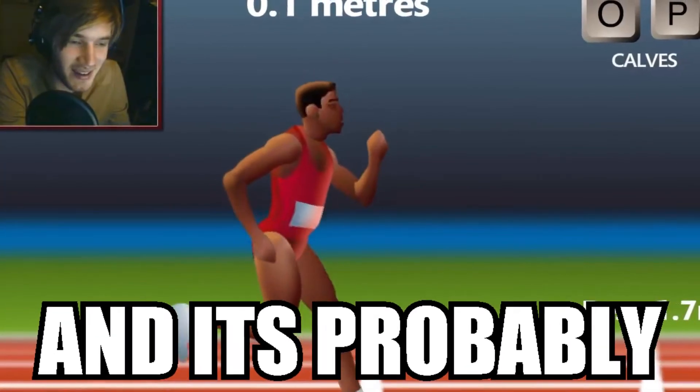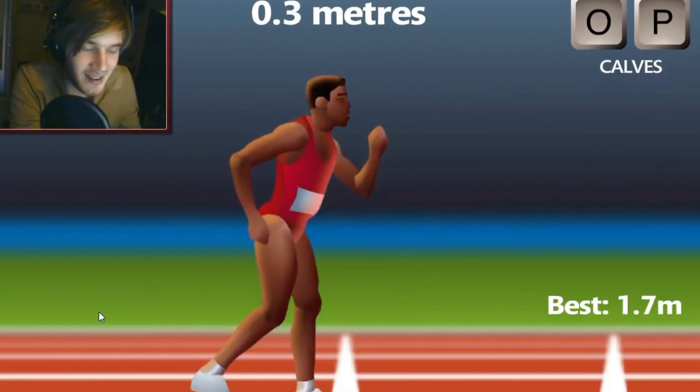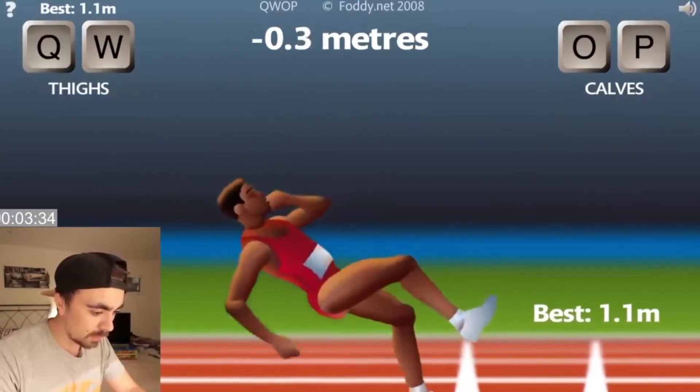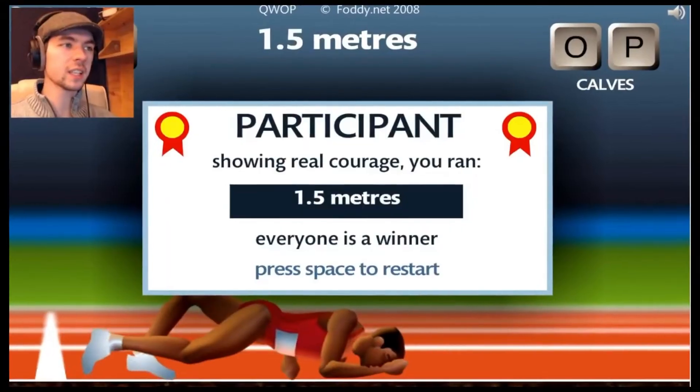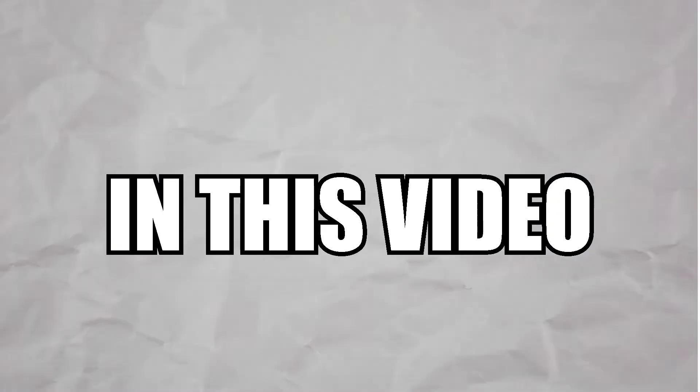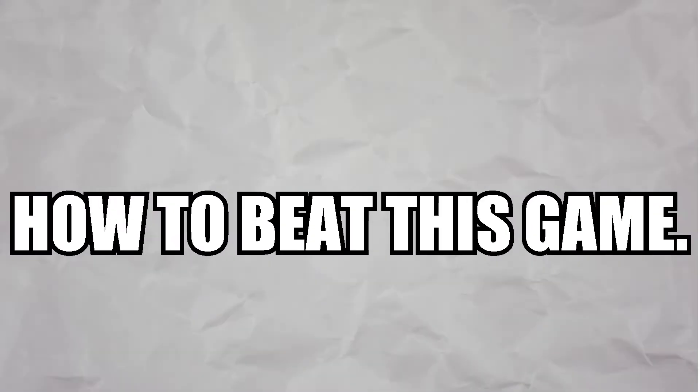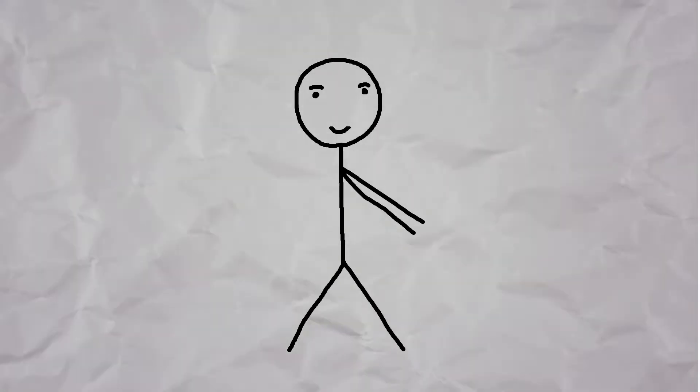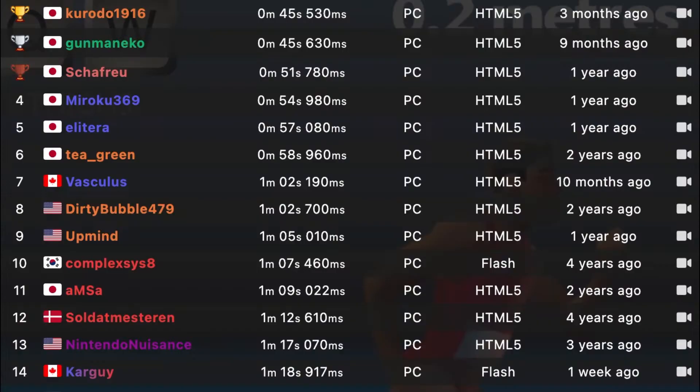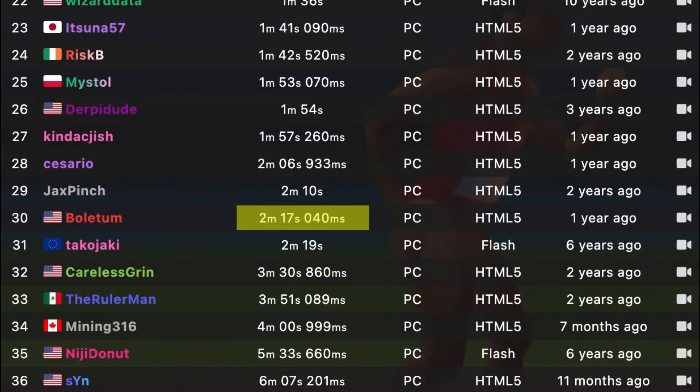This is QWOP and it's probably one of the hardest games ever made. In this video, we're gonna teach an AI how to beat this game. And if that doesn't sound hard enough, I want to get a top 30 speedrun, which means the AI has to reach the finish line in around 2 minutes.